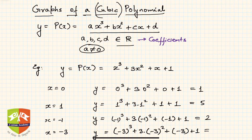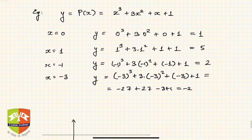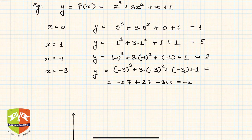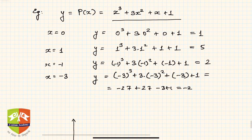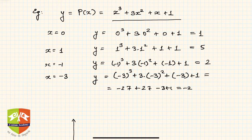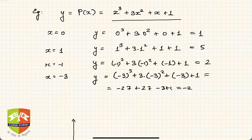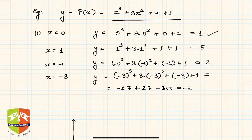Let us take an example and see how to plot a graph. Let p(x) = x³ + 3x² + x + 1. To plot this polynomial, we take different values of x and find the corresponding value of y. When x = 0, substituting 0 everywhere we get y = 1, so our first point to plot is (0, 1).